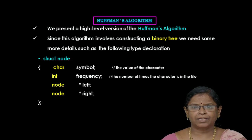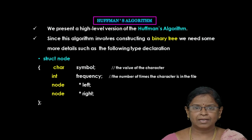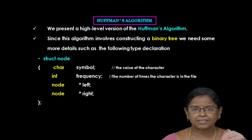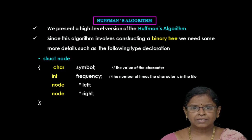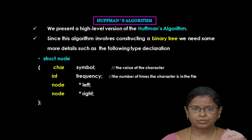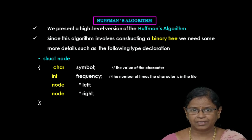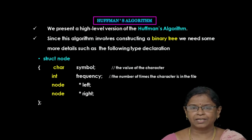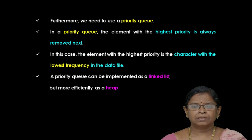The symbol field represents a unique character in the file, and the frequency represents how many times that character occurs in the file. Since it is a binary tree, the node points to a left child and right child. Therefore we have two links: left link and right link. Initially, the left link and right links are null.